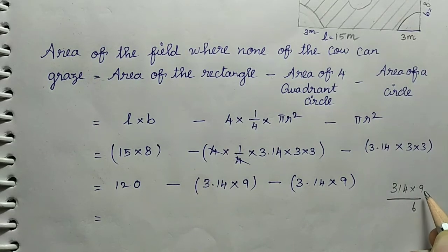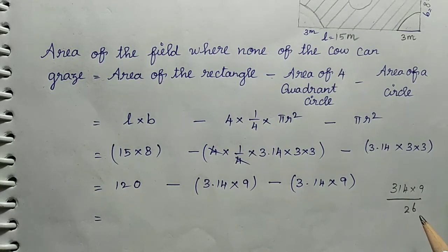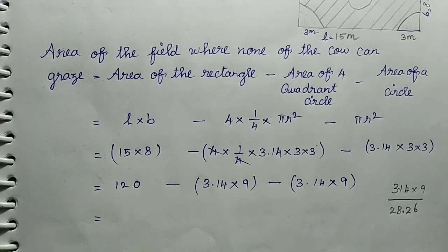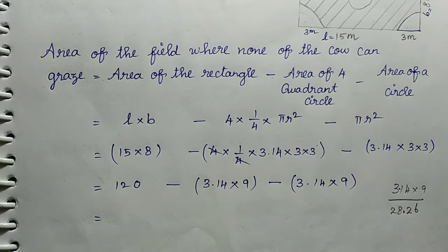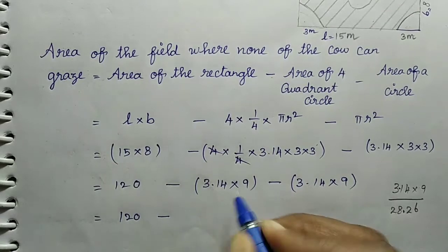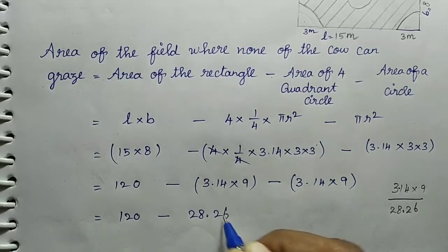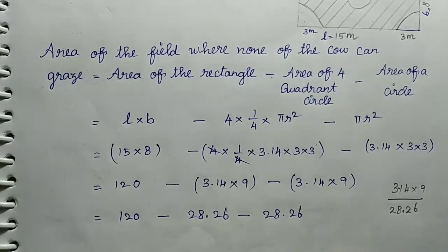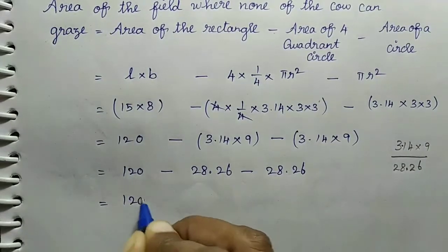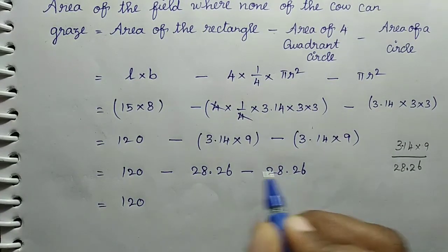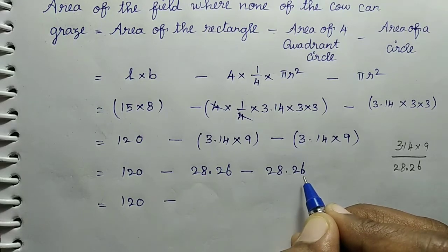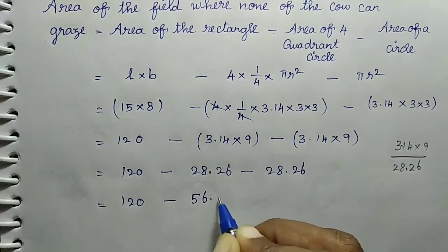Equals 120 minus (3.14 × 9) minus (3.14 × 9). That's 120 minus 28.26 minus 28.26. 28.26 plus 28.26 equals 56.52.